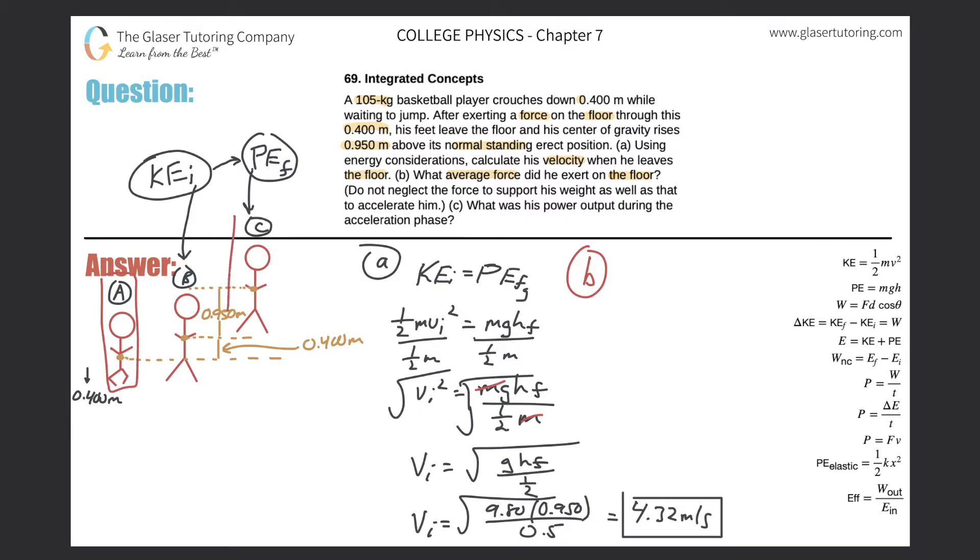What I realize is that now what I'm going to do is I'm going to compare point A to point C. I know all of the energy that he'll have at point C is purely potential, and that potential energy came from point A. The force and the work he did on the floor to propel himself upward. So basically my frame of the problem here is going to be looking from A to C.